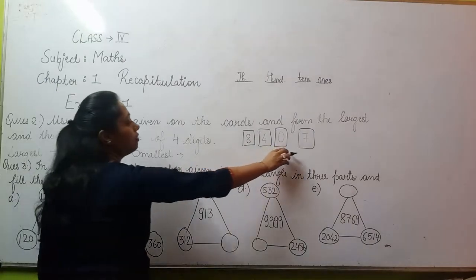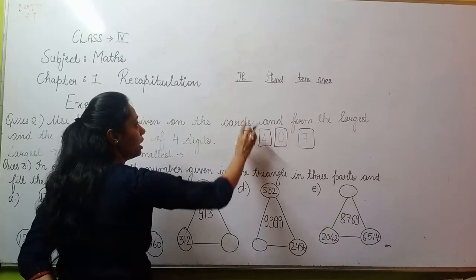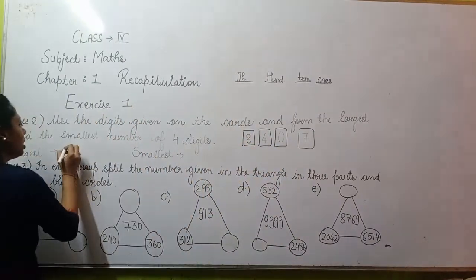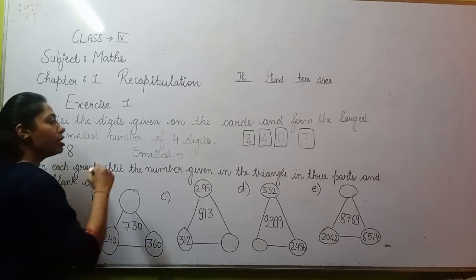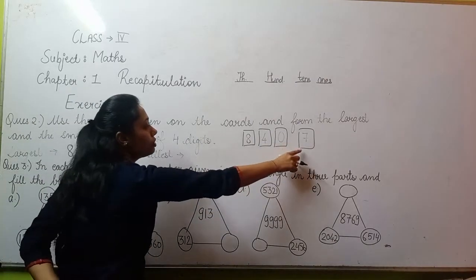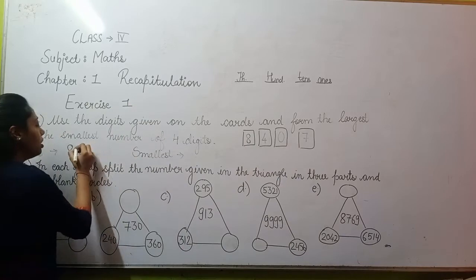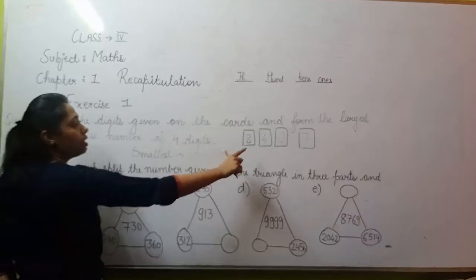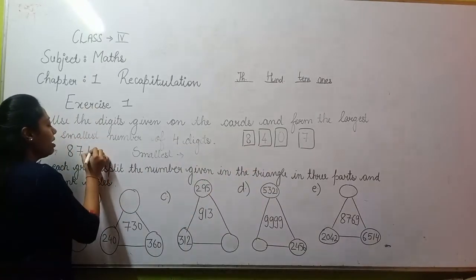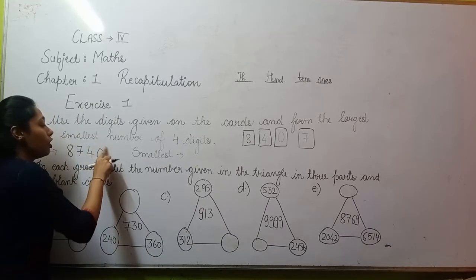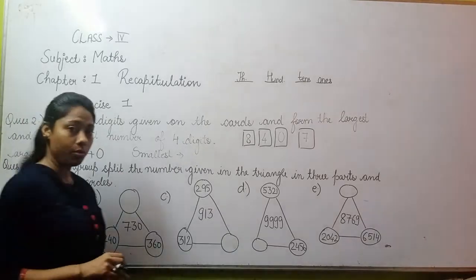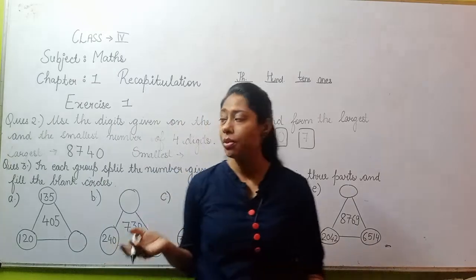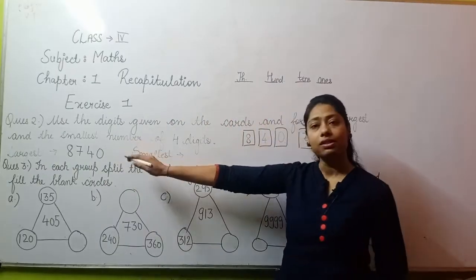So from 8, 4, 0, 7, the largest number is 8. So in the 1000's place, we will write 8. Then after 8, the next largest number is 7, then we will write 7, then you have to write 4, and last, you have to write 0. So the largest number is 8,740.